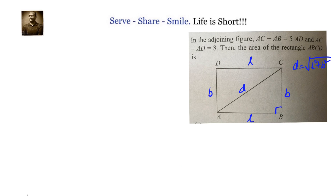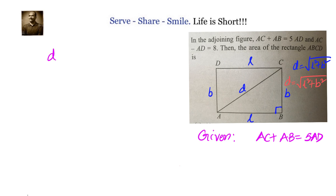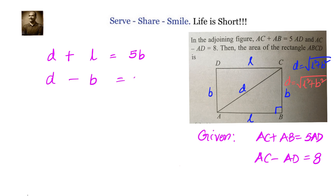Now let's write the given conditions in terms of L, B, and D. The first condition is AC plus AB equals 5 AD — AC is D, AB is L, and AD is B — so we write D plus L equals 5B. The second condition is AC minus AD equals 8 — AC is D, AD is B — so D minus B equals 8.